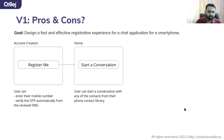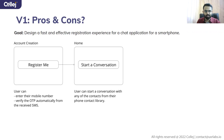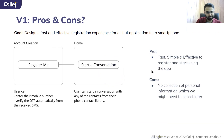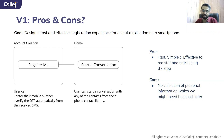Now let's look at the other variation for the same goal. In this version, account creation is simplified: the user simply enters their mobile number, verifies the OTP automatically from the received SMS, taps 'Register Me,' and is able to directly use the services. The pros are it's fast, simple, and effective with fewer steps so you can start using the app quickly. The con is you're not able to collect all the personal information you might need later.